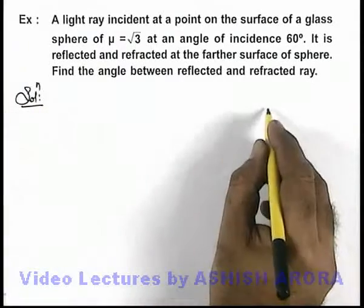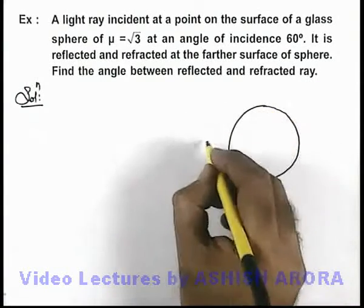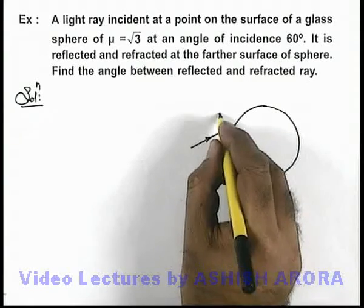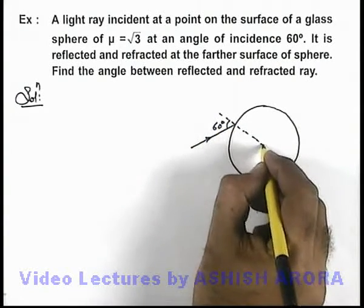In the solution, we draw the glass sphere and the light ray which is incident on it. The ray is incident at an angle of 60 degrees to the normal.